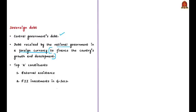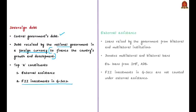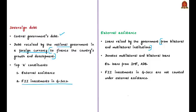In India, the top two constituents of sovereign debt are external assistance and foreign institutional investments in government securities. External assistance means loans raised by the government from bilateral and multilateral institutions — it denotes multilateral and bilateral loans received under agreements between the Government of India and other governments or international institutions, and also the repayments of such loans. Examples include loans from the IMF and the Asian Development Bank.